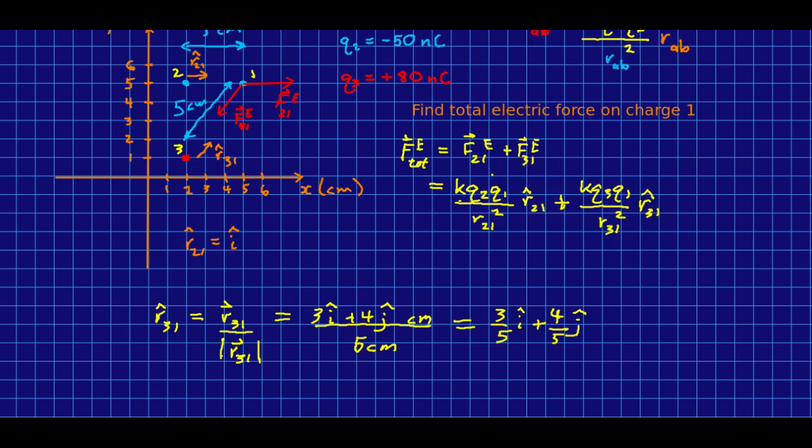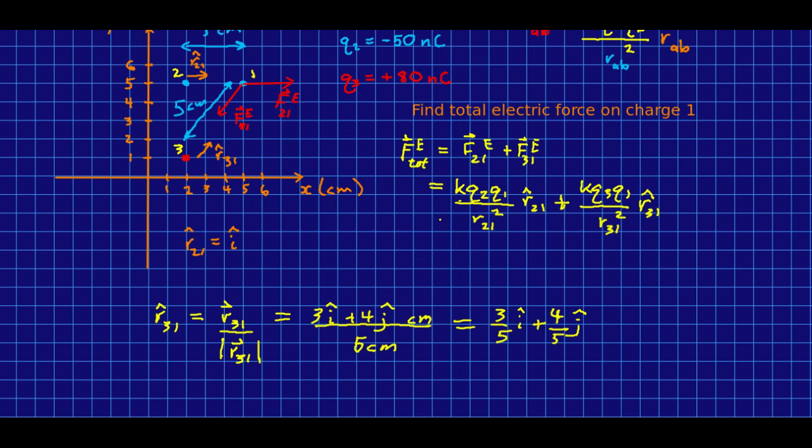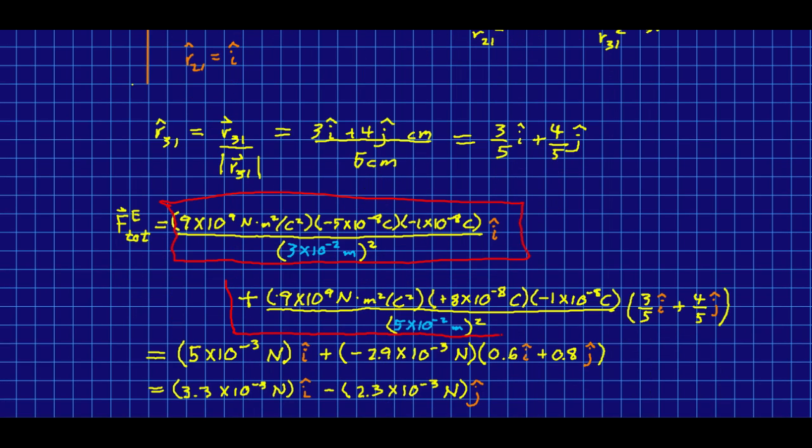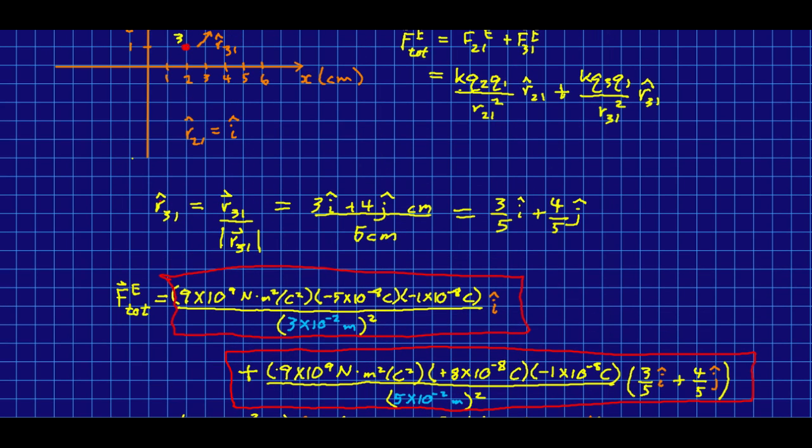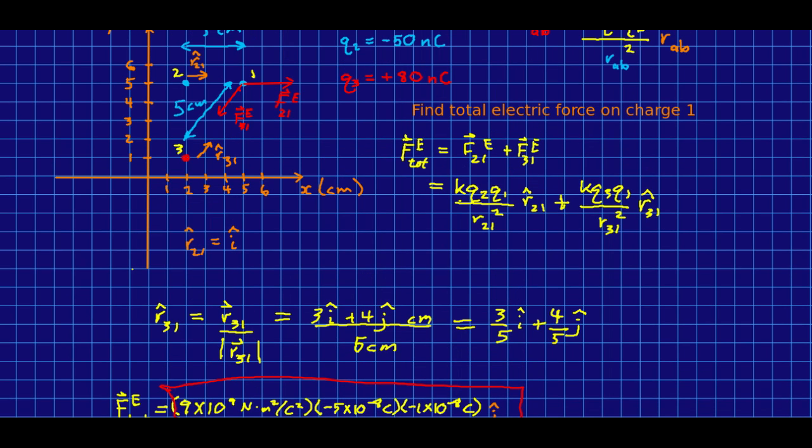We can now easily write out this total force because we have all these numbers. I have plugged all the numbers into that expression. Note that tens of nanocoulombs comes out to 10 to the negative 8 coulombs and centimeters is 10 to the negative 2 meters. This part here is the force that 2 is exerting on 1. And this part here is the force that 3 is exerting on 1. Just plugging in the numbers I get this which simplifies slightly to this. The point is that calculating the unit vector is actually rather simple because you can just write down a vector pointing from 3 to 1 very easily and then divide it by its own magnitude to get the unit vector.